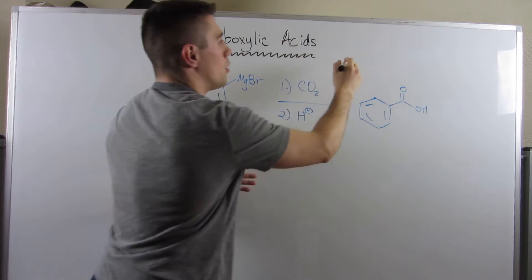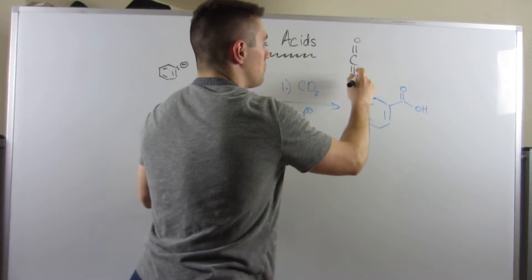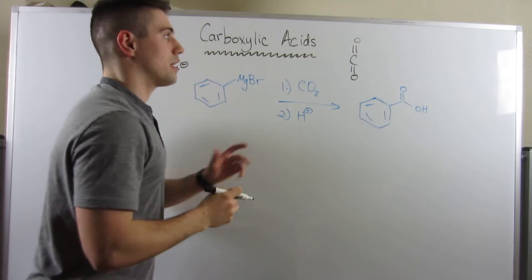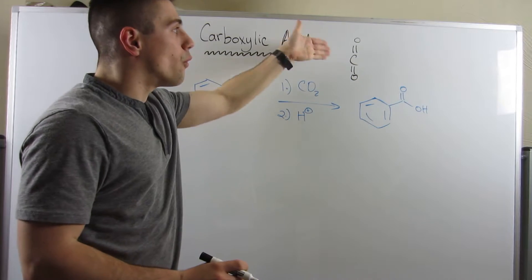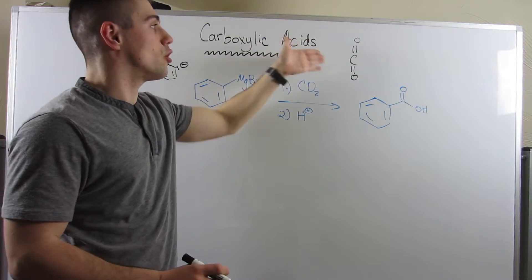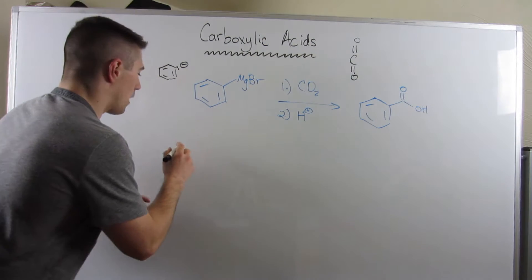Now think about what we're attacking. We know Grignards are very negative and they like to attack positive things. Look no further than carbon dioxide. Not only is he kind of like a carbonyl, he has four bonds to oxygen. He is so partially positive, the perfect substrate for a nucleophile.